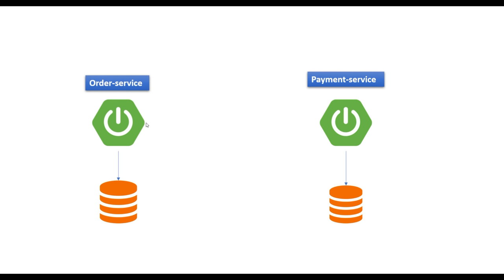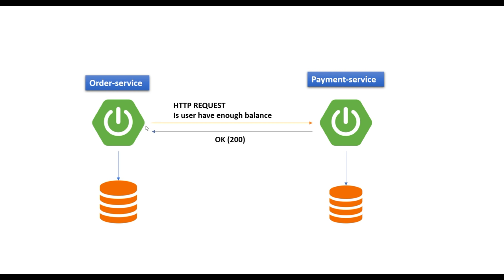With the database-per-service pattern, the order service has its own database for managing orders, and the payment service has its own database for managing payments. The order service receives the request from the user, redirects it to the payment service to validate whether the user has enough balance. If the user has enough balance, payment service deducts the amount and sends an OK response. Order service then completes the order, or cancels it if no OK status is received.